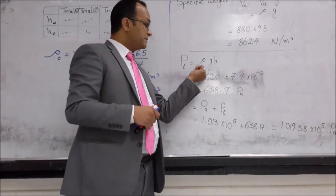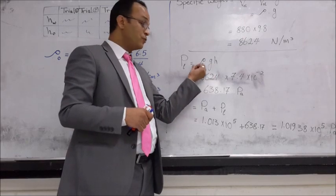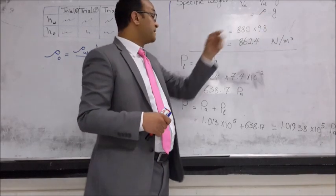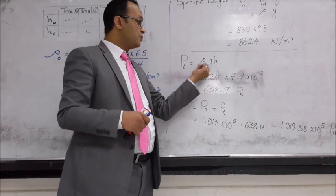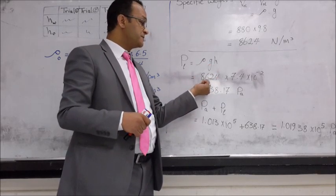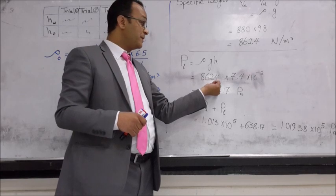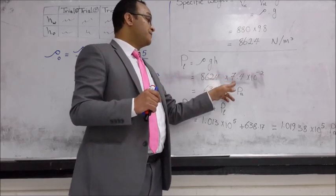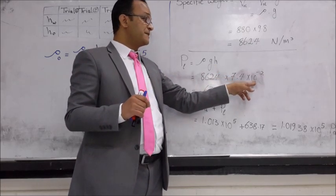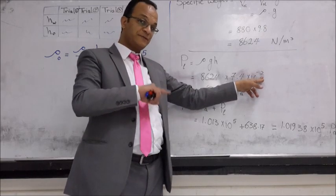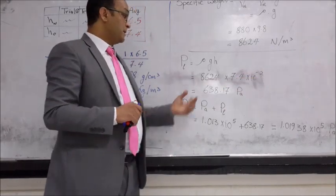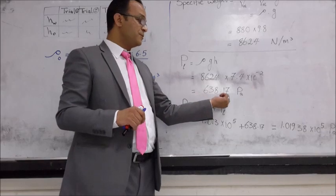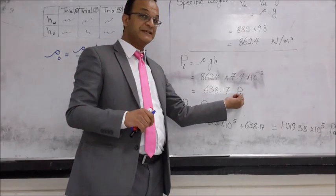As you can see, density times g or ρ times g is previously determined and we called it specific weight. So we will replace ρg to become 8624. We will multiply by the height. Here we have to use the SI units. So the height is 7.4 times 10 power negative 2 to convert it from centimeter into meter. Do your calculations. So the final result will be 638.17 and the measuring unit for pressure is Pascal.